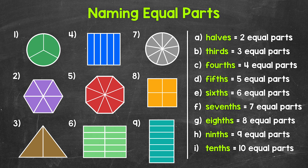We will cover 2 equal parts up to 10 equal parts in this video. Now keep in mind, do fractions stop at 10 equal parts? No, we can have 12 equal parts, 25 equal parts, 30 equal parts — whatever the case may be. But this is a nice place to start and build off of. Let's jump into our examples where we need to figure out the number of equal parts a whole has been divided into, and then we will match that to the name for those equal parts.